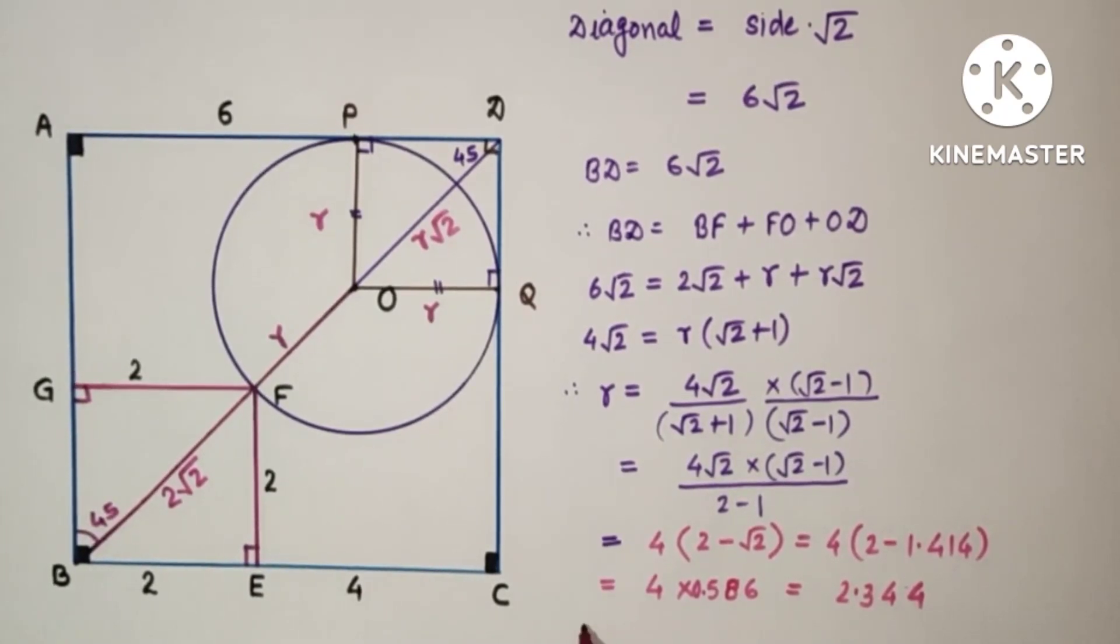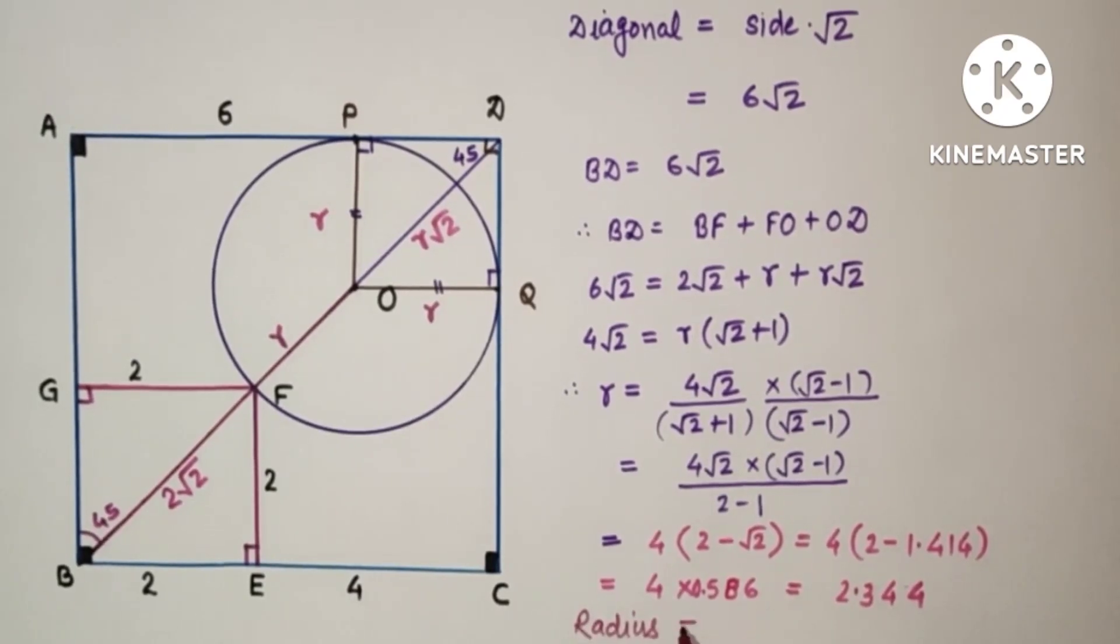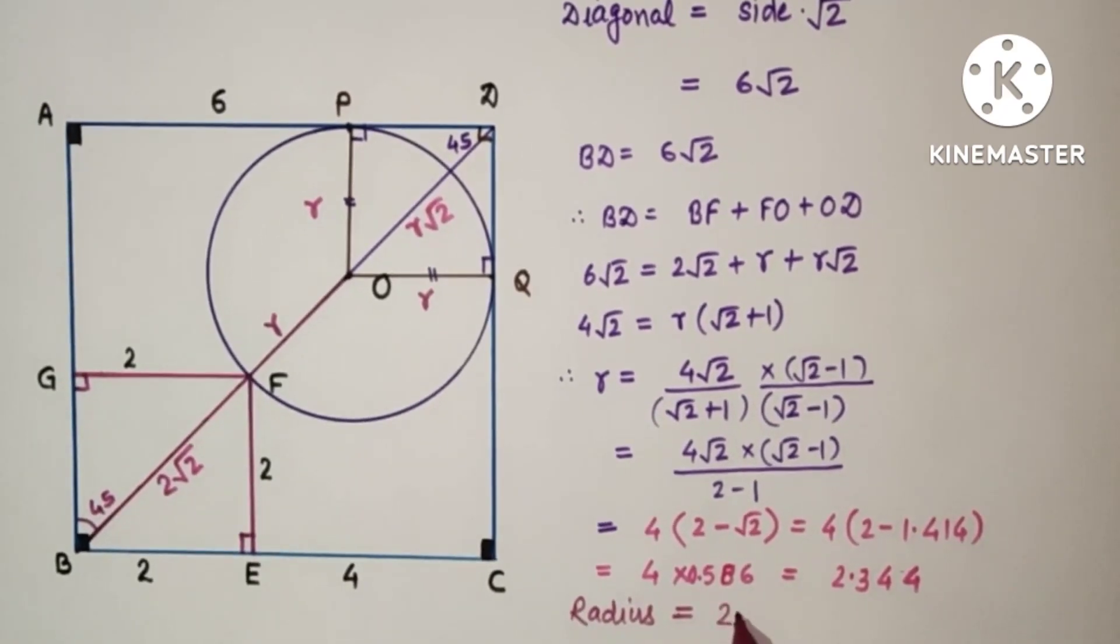That is the answer. So radius of the circle is equal to 2.344 units. And that is the answer.